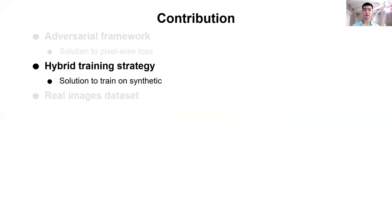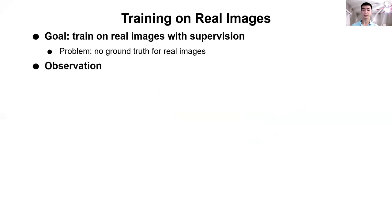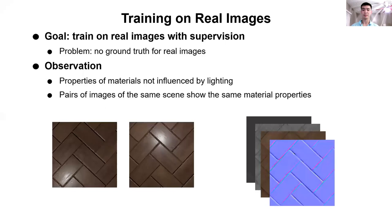Now I'm going to talk about our hybrid training. Our goal here is to train our network on real images. However, the main problem is that the ground truth of the real images are hard to obtain. Our main observation is that the material properties are not affected by the lighting used to capture the input images. Therefore, the material properties of a pair of images of the same scene from the same view with different lighting should be exactly the same.